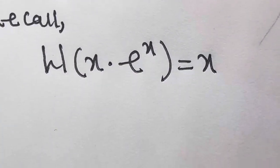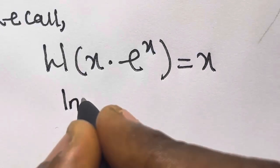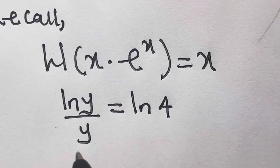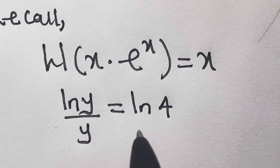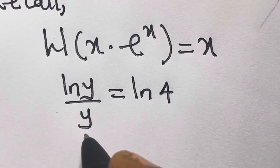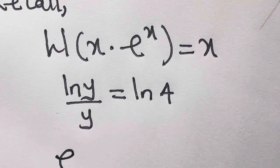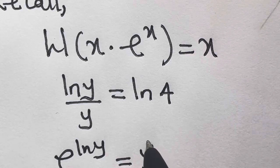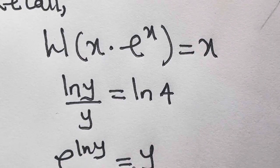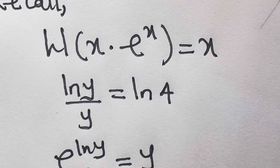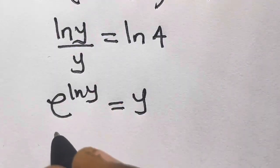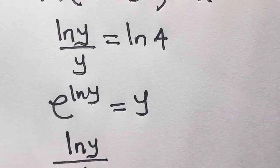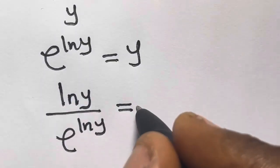We have ln(y) divided by y equals ln(4). We want to create an exponential in this. You know that e^(ln y) equals y, because the exponential cancels the ln. So we can replace y with e^(ln y), and this will become ln(y) divided by e^(ln y) equals ln(4).